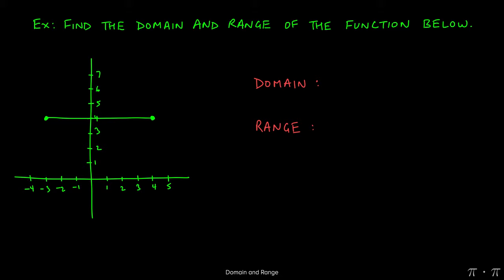Now let's modify the graph to be a straight horizontal line from negative 3 to positive 4. There are no holes or breaks, so the domain is from negative 3 to positive 4, inclusive of both — indicated by brackets on both sides. For the range, no matter what x value you pick, the y value is always 4. When the range is a single number rather than an interval, we indicate it with curly brackets, so the range is just {4}.